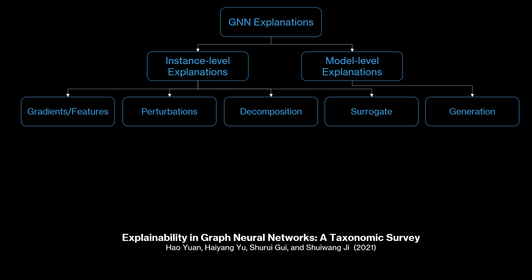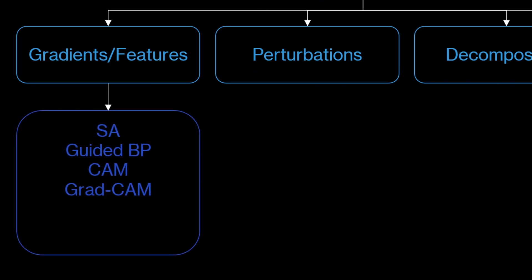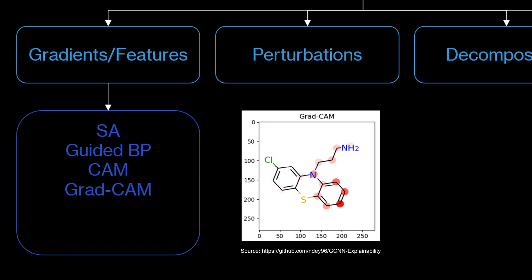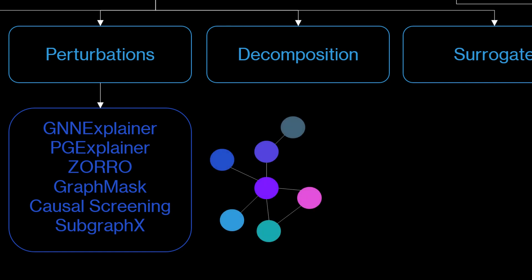For these instance level predictions one research branch is using the gradients to back propagate a model output to the input space. This back propagation allows to determine how important the input features were for the model. To give you an example, this image shows the result of grad cam which stands for gradient class activation mappings applied on molecule data. It tells us which atoms had the highest contribution to the classification result. Another branch applies perturbations on the input graphs in order to analyze the reaction of the model. Doing this we find out which nodes and edges are most important for the predictions. Whenever these elements are present in the input graph the model should stick with the current prediction and once they are removed it might lead to a different outcome.